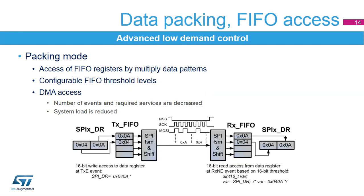When the communication speed is fast and data frames too short, it can be a demanding task to ensure correct data flows, especially when the clock signal becomes continuous and full duplex mode is used. Slave nodes are more critical, as they have to follow properly all the transaction timing provided by the master to prevent any data overrun or underrun conditions. When the data frame size fits into a byte, packing mode can be used. Multiple data patterns can be written or read in a single access to the FIFO registers. Together with the proper setting of the FIFO threshold event, the number of events to service decreases to better control the data flow.